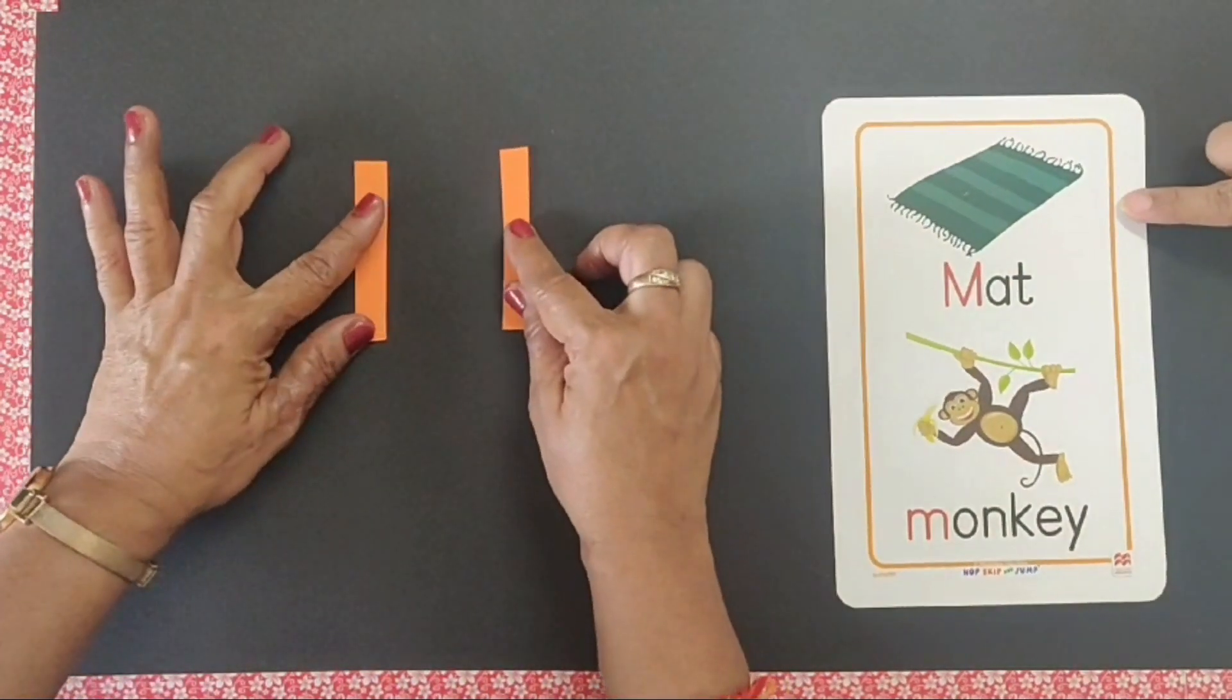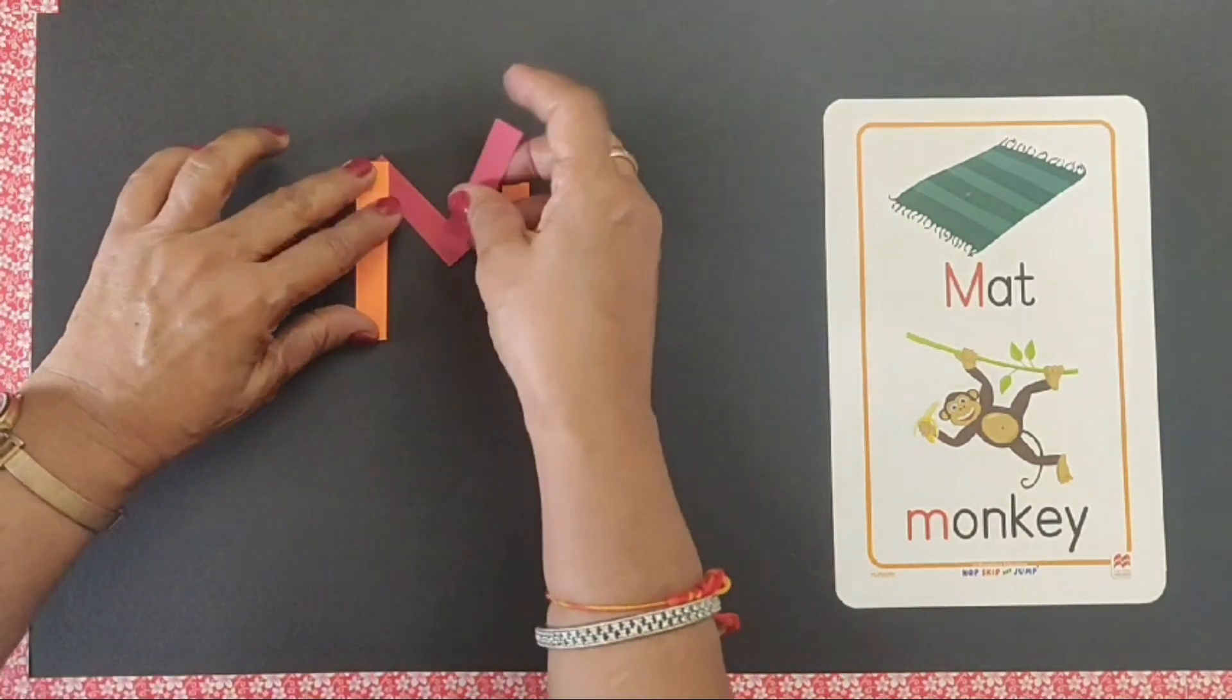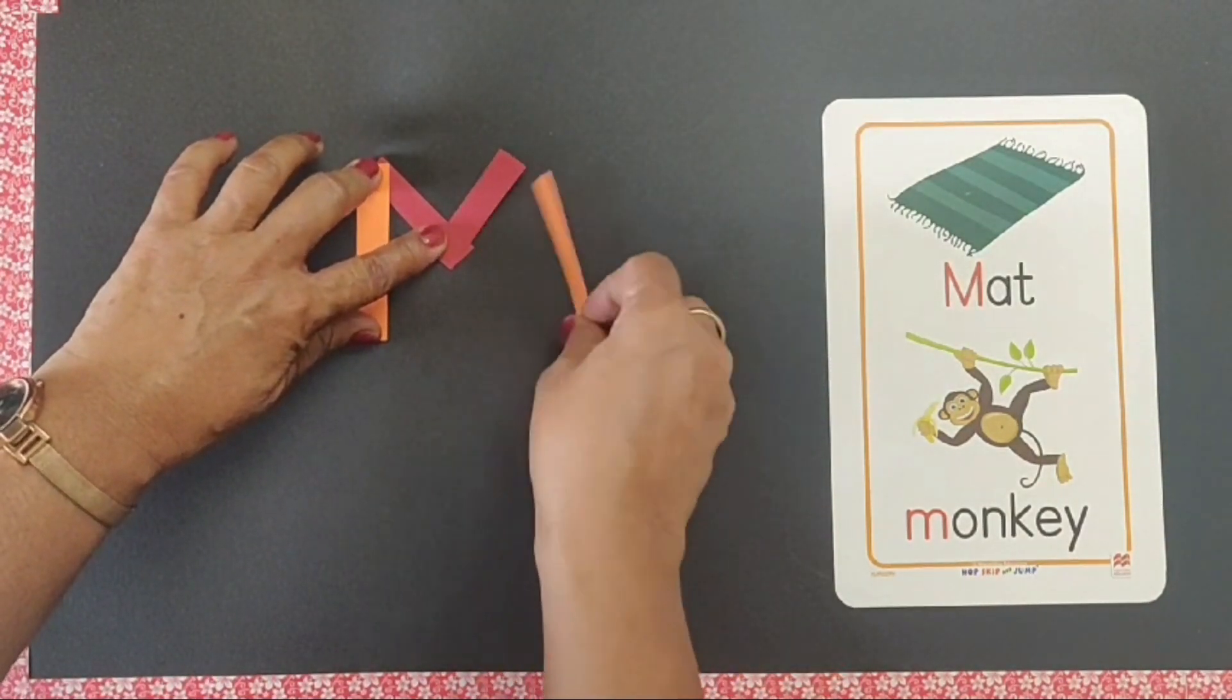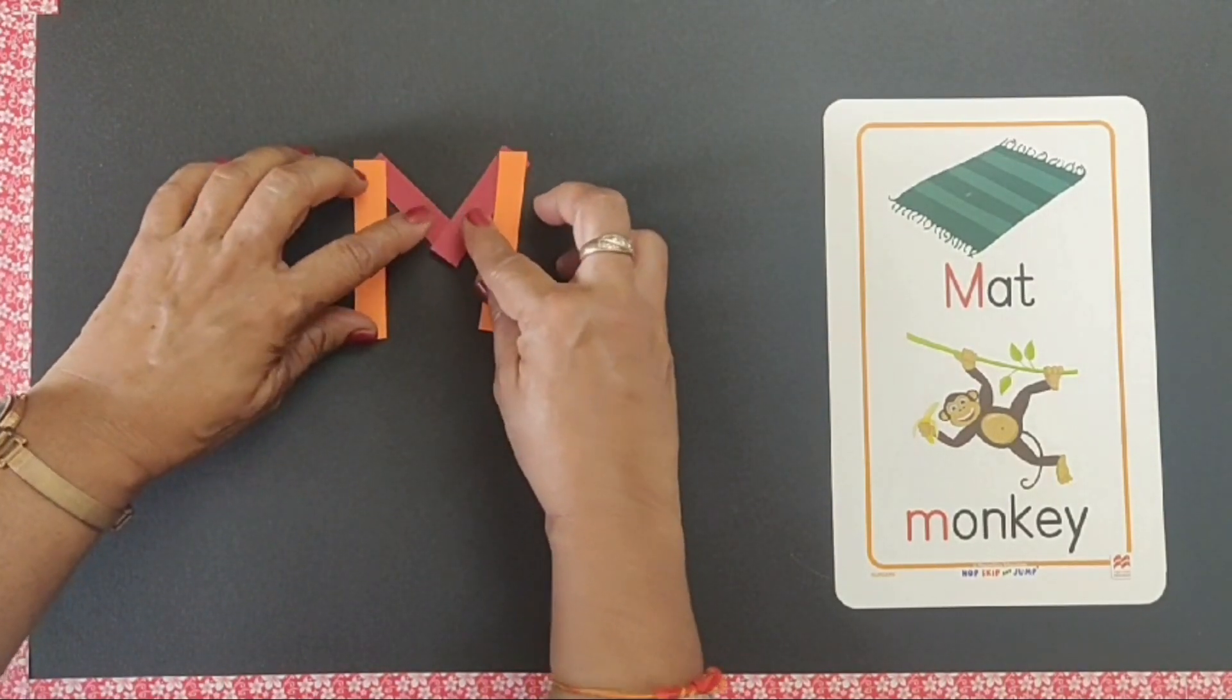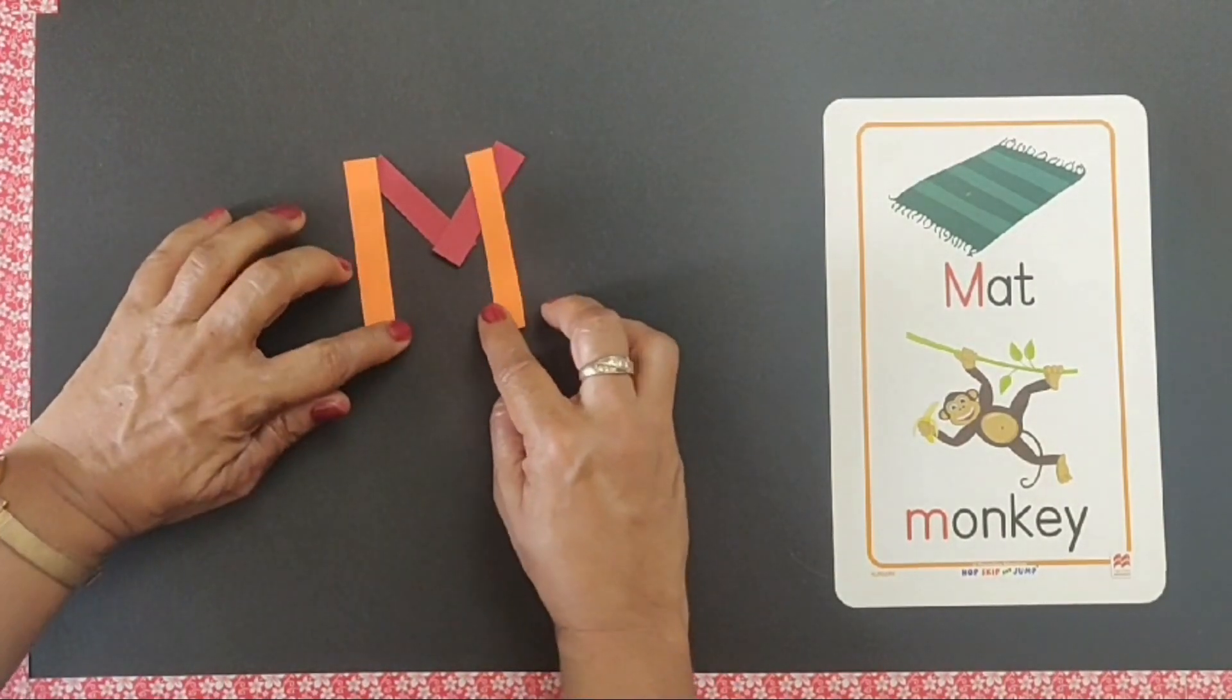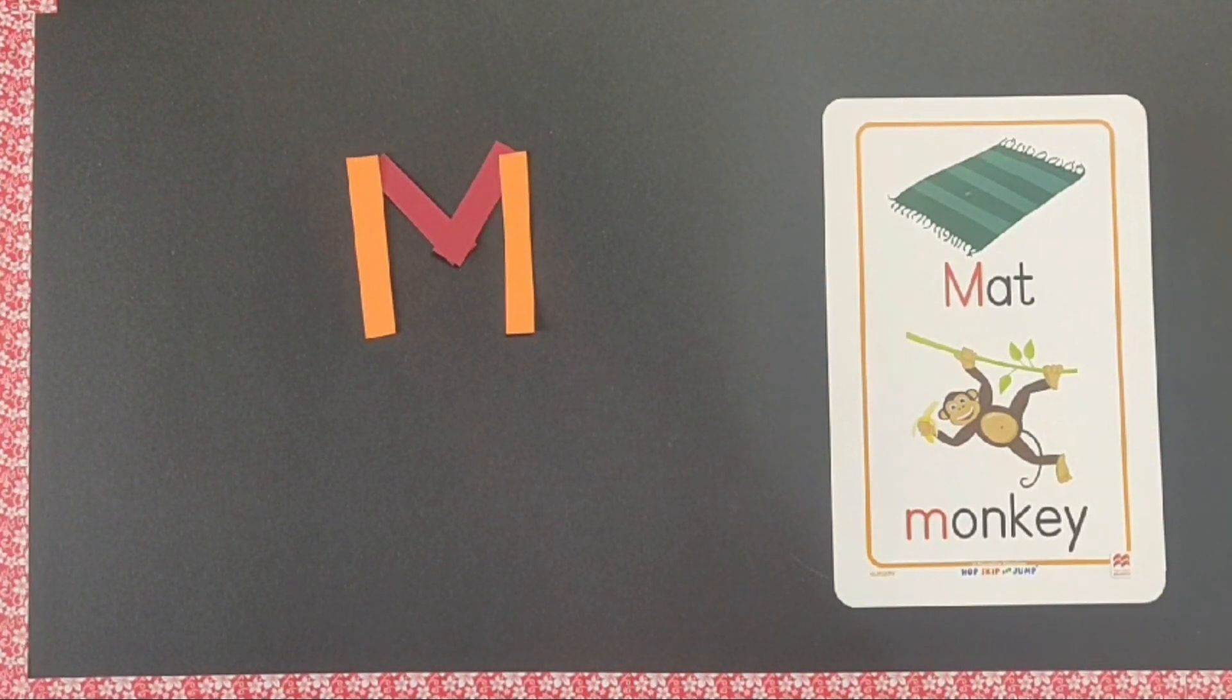Two bigger strips, two smaller strips. M. Say M, M says muh, M for mat.